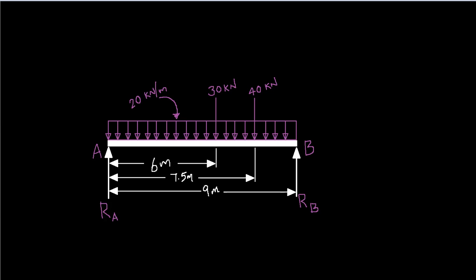Let's try to solve this system and draw the shear force and bending moment diagram. It's a 9-meter long beam with a uniformly distributed load of 20 kN per meter, a 30 kN load acting at 6 meters from point A, and another load of 40 kN at 7.5 meters from A.